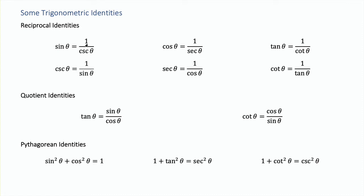If you know the cosecant of an angle, you can just take its reciprocal and get the sine, or vice versa. The same thing applies to cosine and secant functions—those are reciprocals of each other—and the tangent and cotangent functions are reciprocals of each other as well. These are the reciprocal identities, and they're very useful for finding trigonometric functions when we already know one.